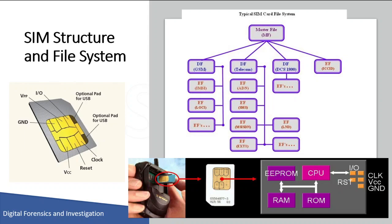A SIM card contains a processor and operating system with 16 to 256 kilobytes of persistent, electronically erasable and programmable read-only memory, also known as EEProm. It also contains RAM, which is random access memory, and ROM, which is read-only memory. RAM controls the program execution flow, and ROM controls the operating system workflow, user authentication, data encryption algorithm, and other applications. The file system of the SIM resides in persistent memory and stores data such as name, phone number, text messages, and network service settings. Depending on the phone used, some information on the SIM may also co-exist in the memory of the phone.